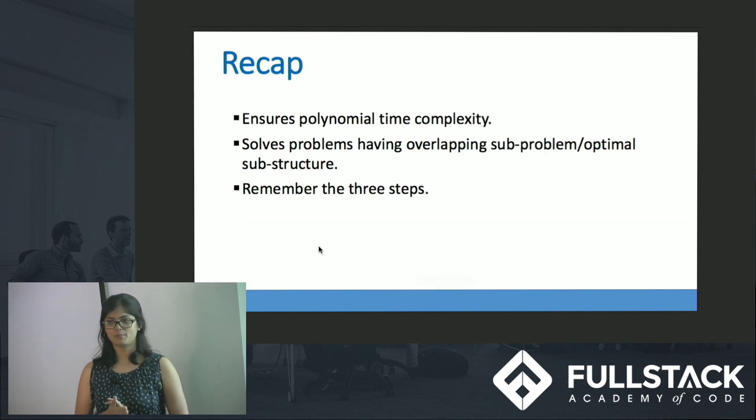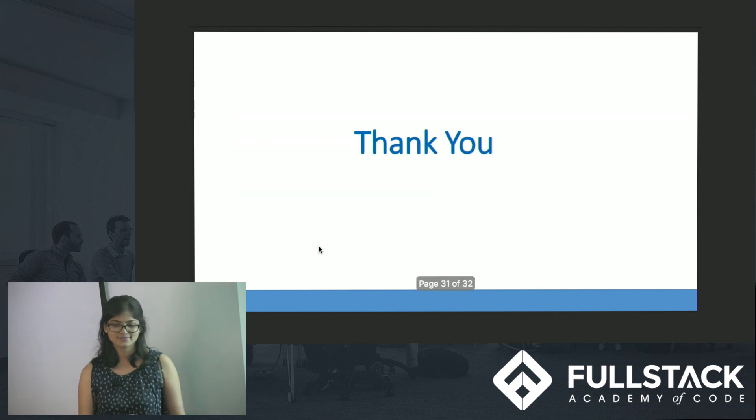The quick recap of my talk would be if I use dynamic programming it ensures a polynomial time complexity. I can solve a problem which takes exponential or factorial time and reduce the time complexity to be polynomial. What kind of problem does dynamic programming solve? It solves an overlapping sub-problem which we saw in Fibonacci and optimal substructure that the example I gave using the graph. Remember the three steps that we spoke about. Thank you.